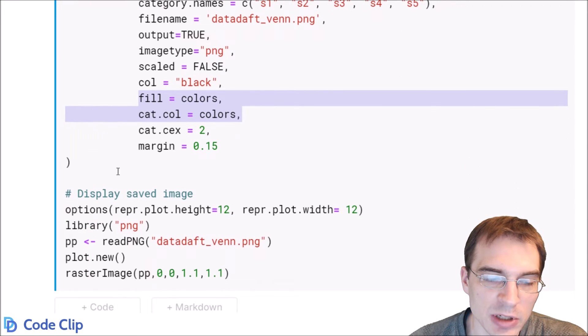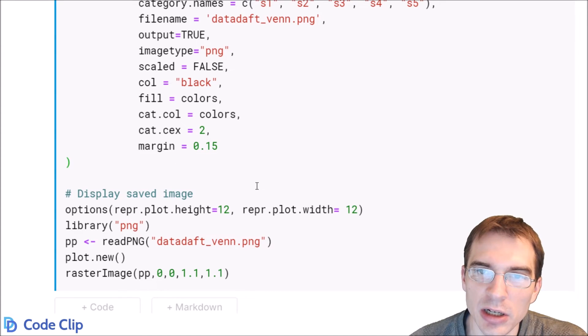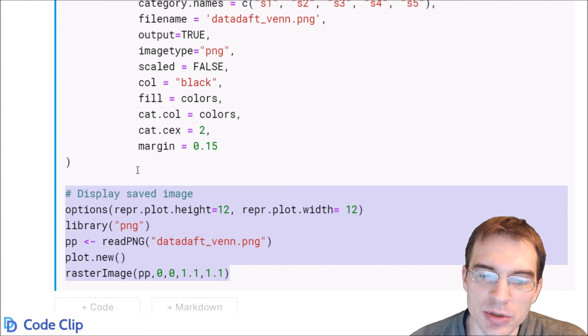And now at the bottom here, after the call to venn.diagram, the plot has already been made and saved as a PNG image, but to actually display it here in the notebook so you guys can see it, we have to do this call to display the saved image. So if all you need to do is save the plot and then you're going to use it somewhere else, you wouldn't need to do this.